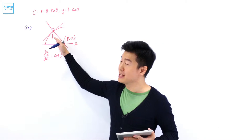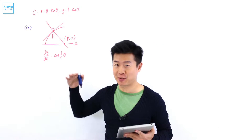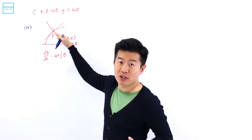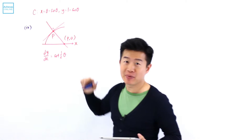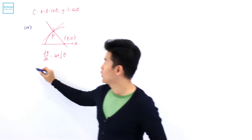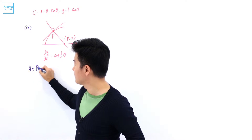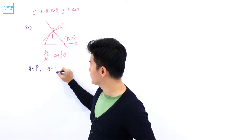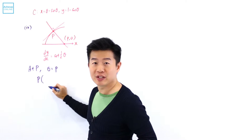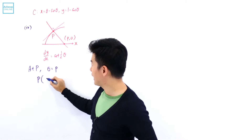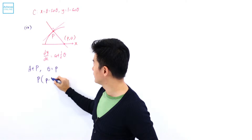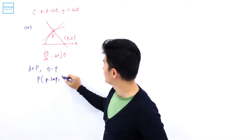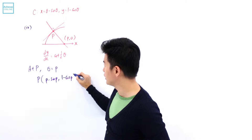We are given a point P with the parameter theta equal to P. What we want to do is show that the normal at this point P passes through the point P₀. The coordinates of this point P are: x-coordinate is P minus sine P, and the y-coordinate is 1 minus cosine P.